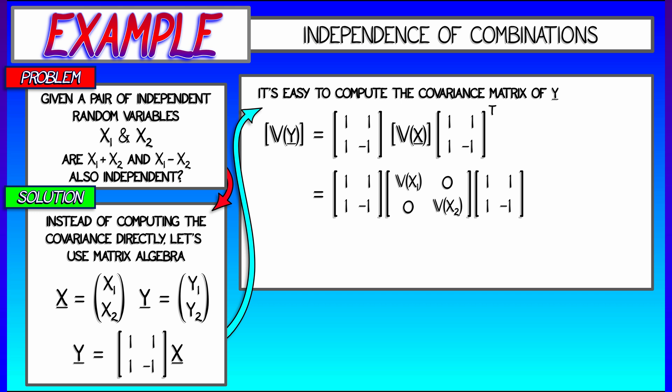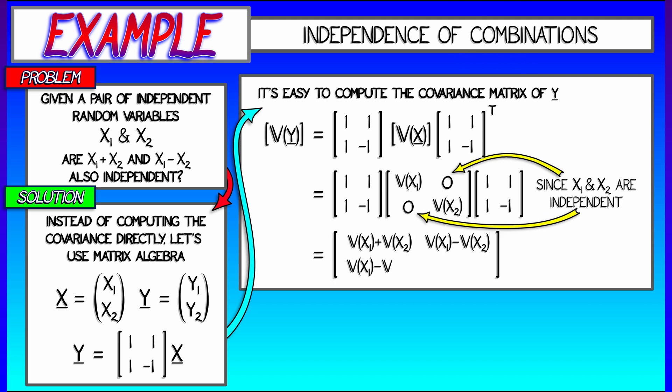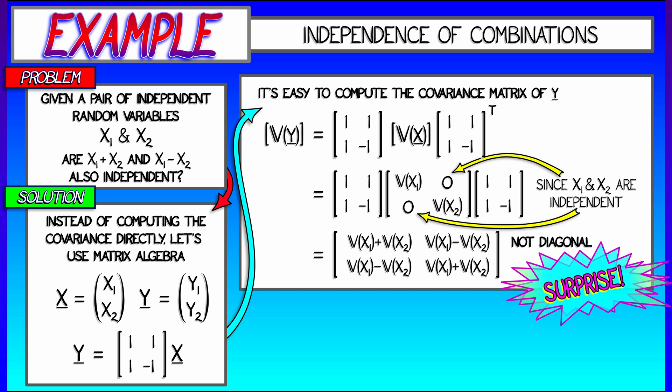We know that since x1 and x2 are independent, then the covariance matrix for x is diagonal. And the diagonal entries are the variance of x1 and x2. So what happens when we multiply this out? Well, we do so, and surprise, we do not get a diagonal matrix.